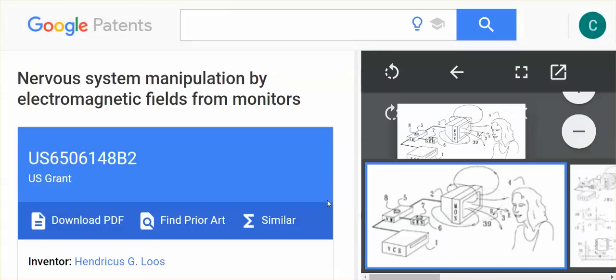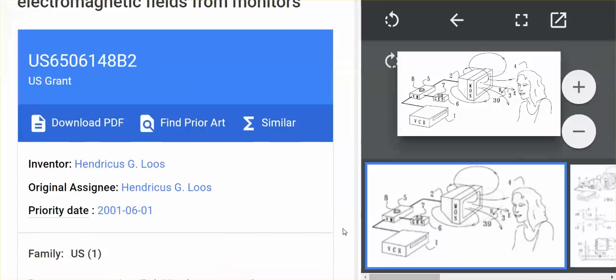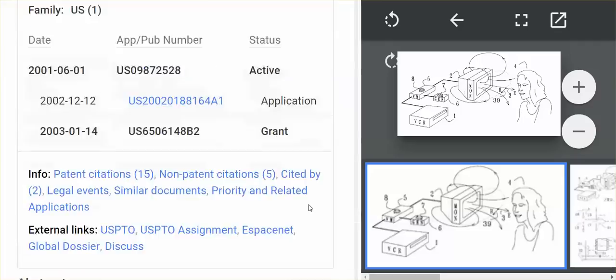Many know about this patent. Nervous system manipulation by electromagnetic fields from monitors. Wow. Look at this diagram. So you sit in front of your computer monitor, but it's not just a computer monitor. It's also a TV screen, cell phone screen. Yes.